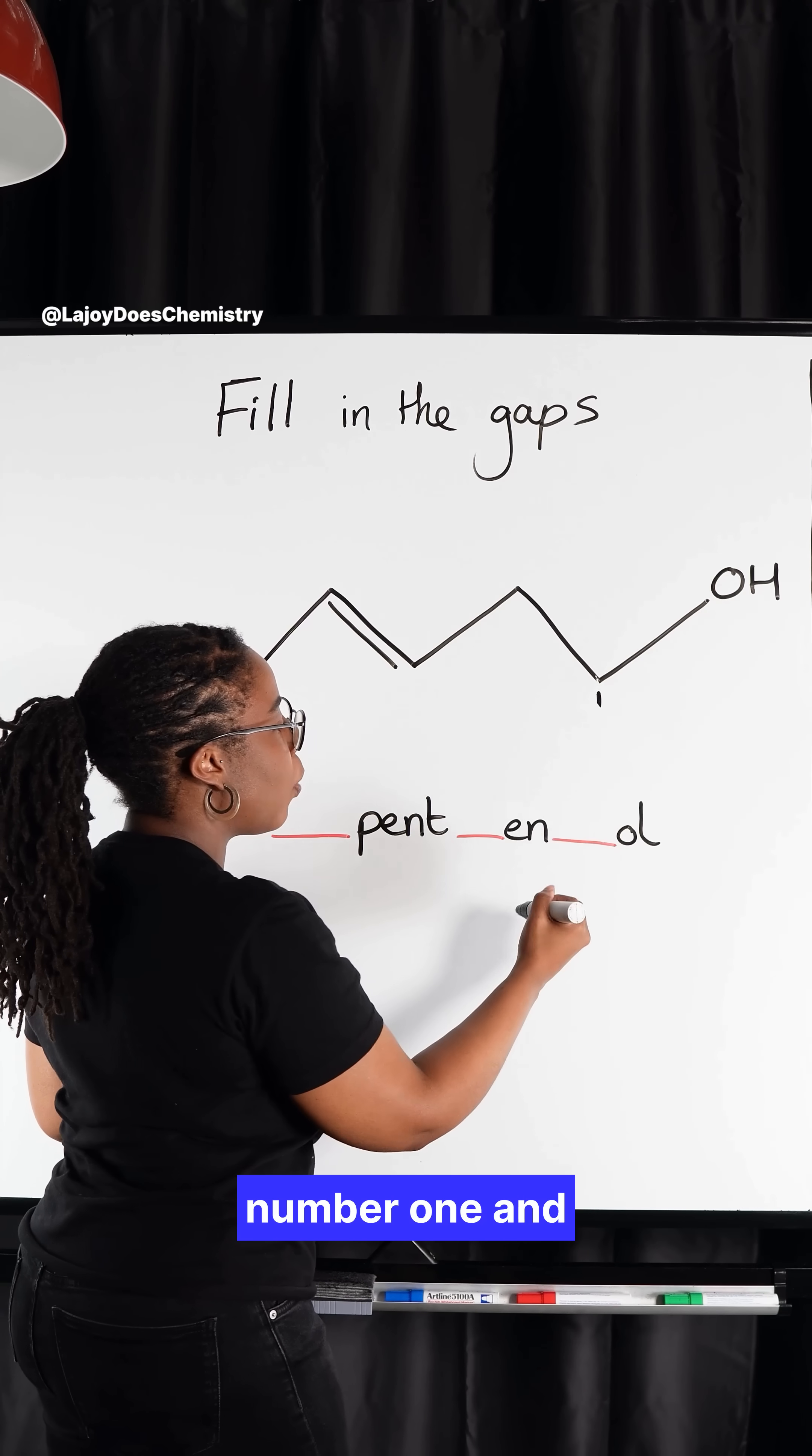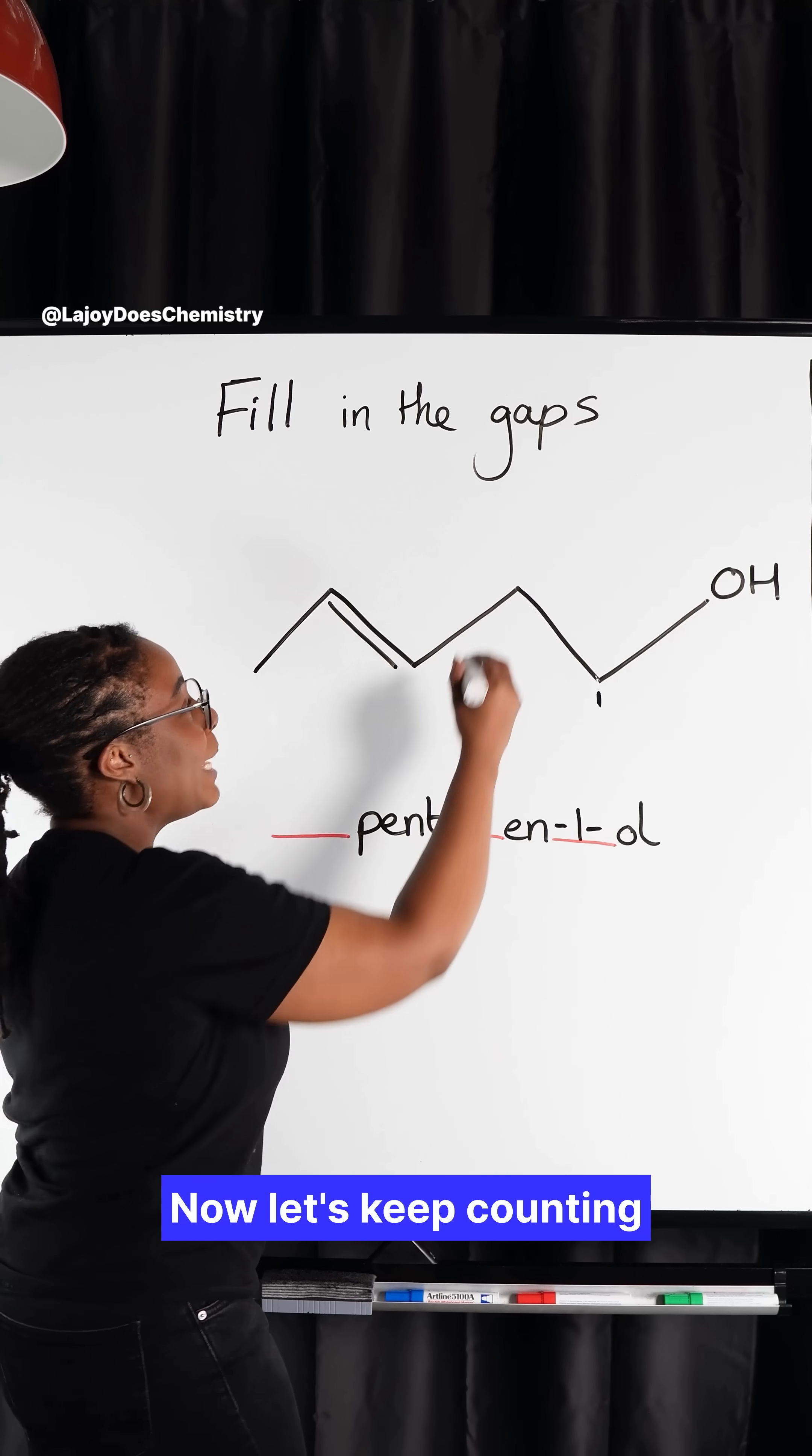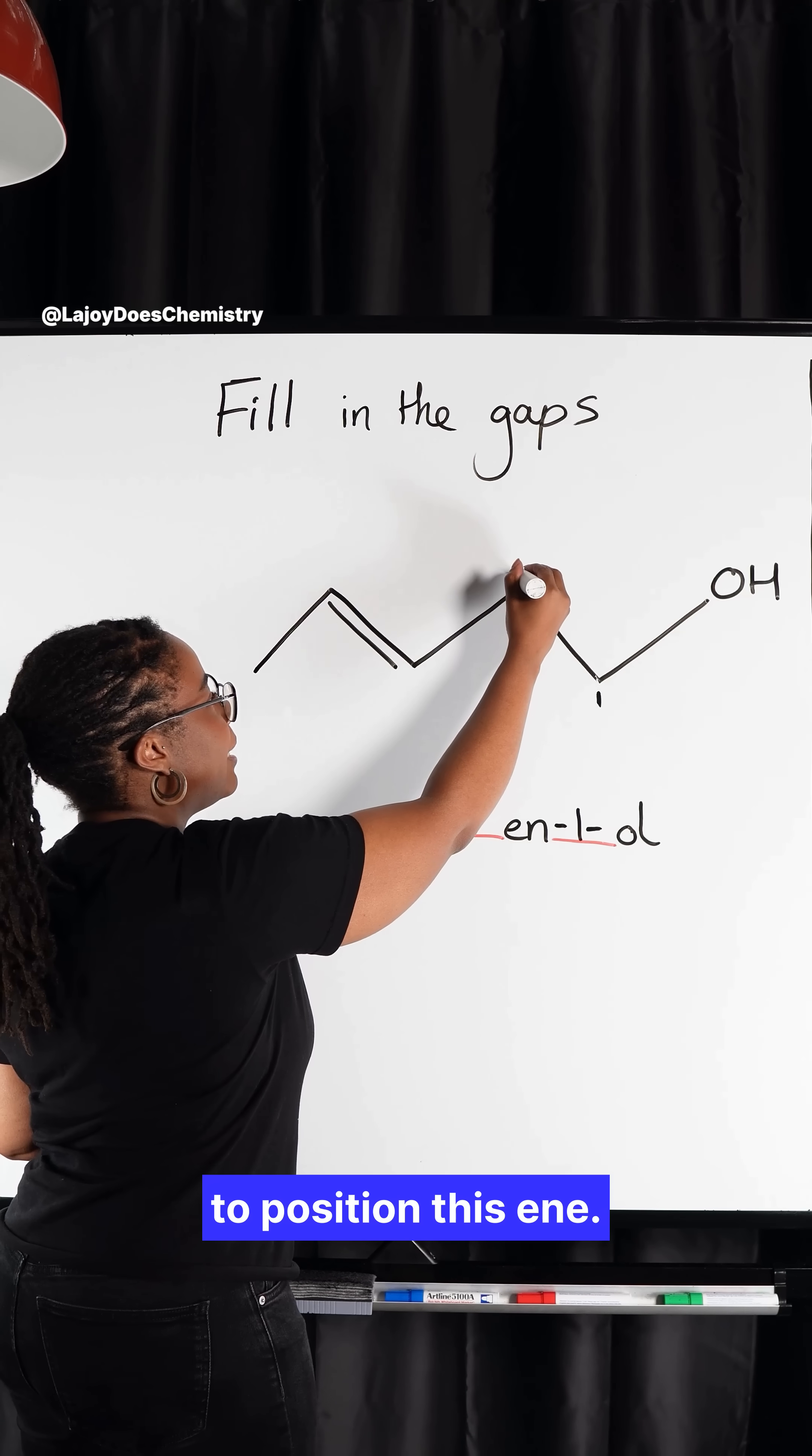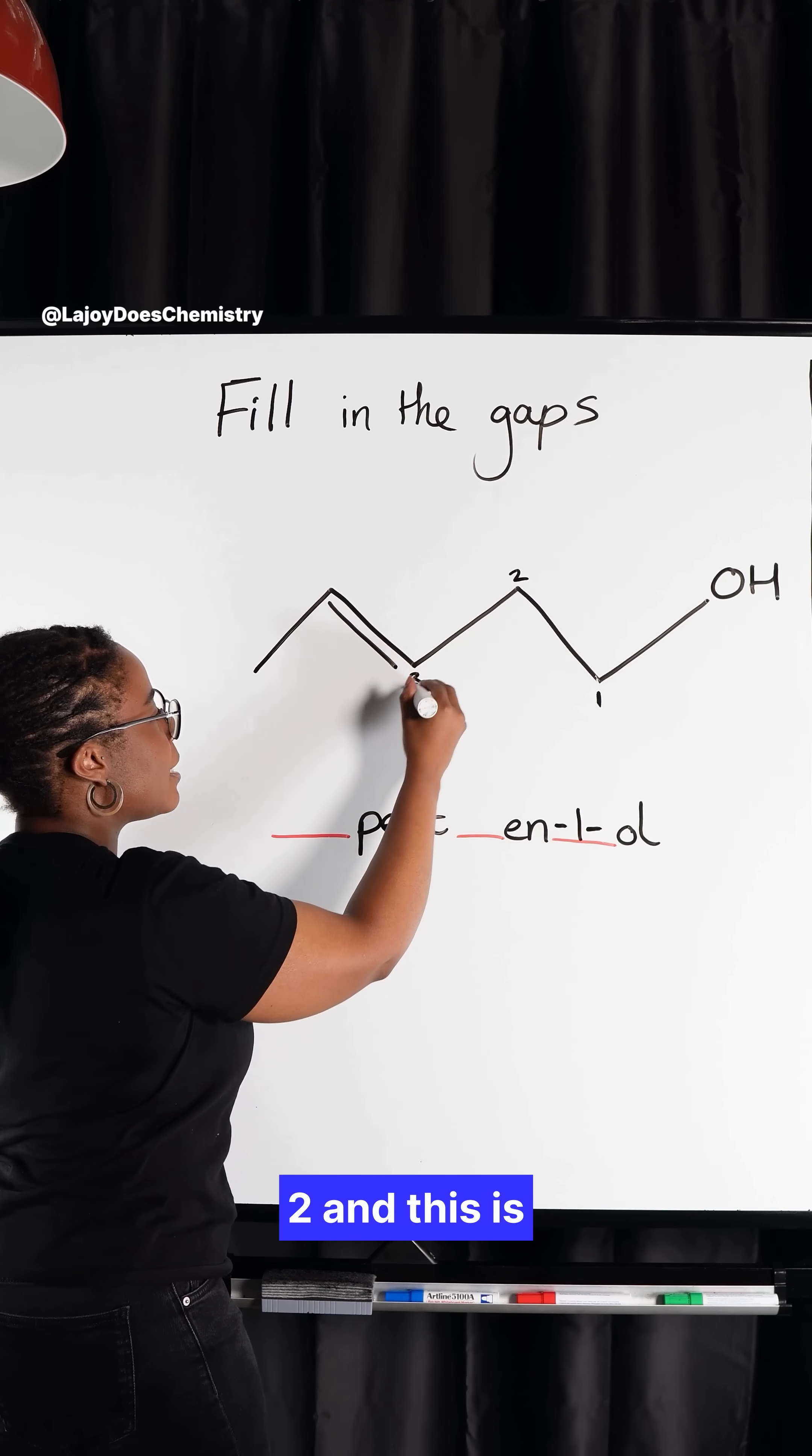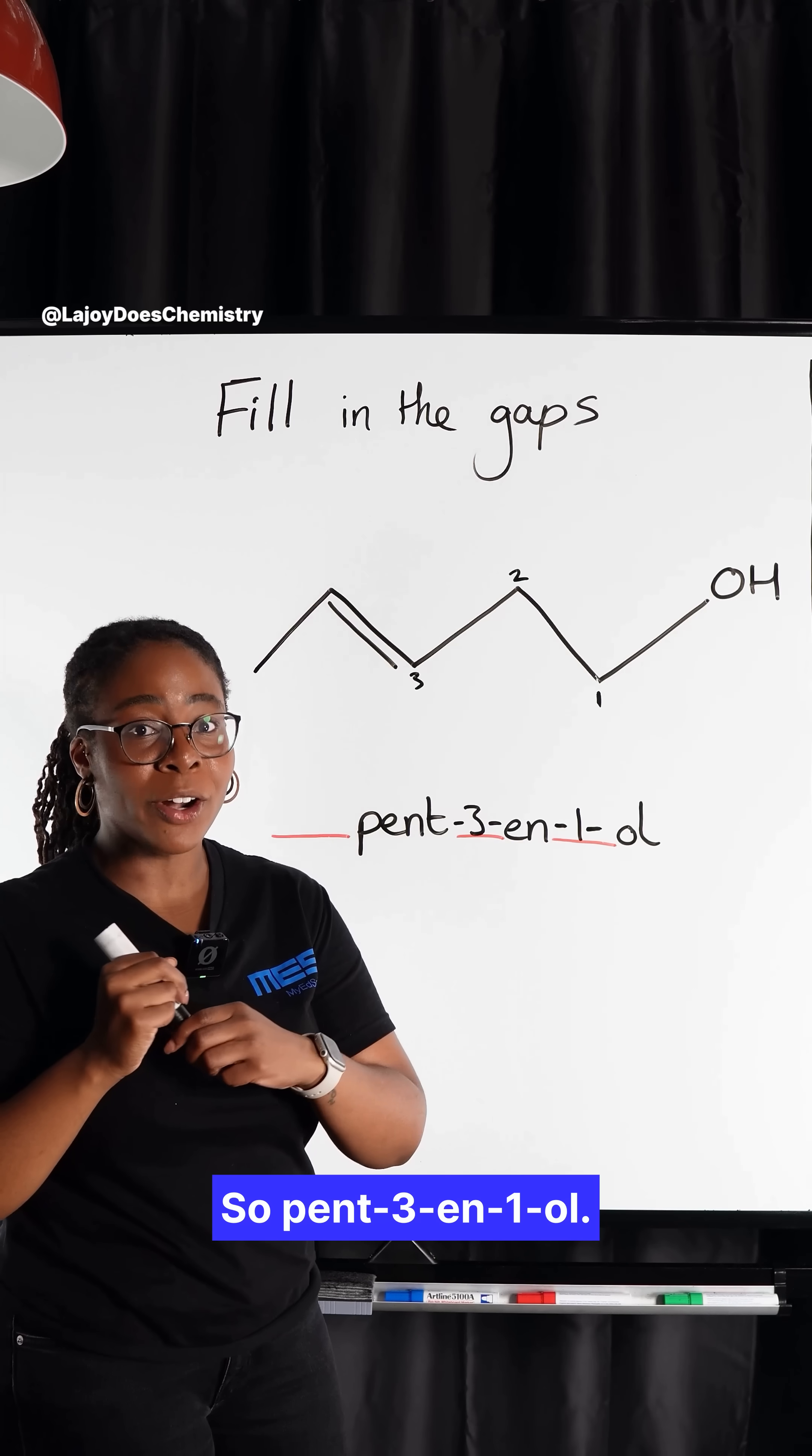That makes this carbon number one and therefore this one ol. Now let's keep counting to position this in. This is carbon two and this is carbon three. So pent-3-en-1-ol.